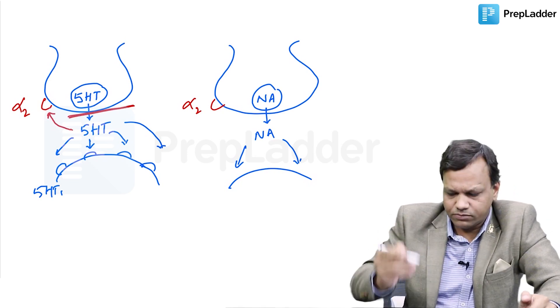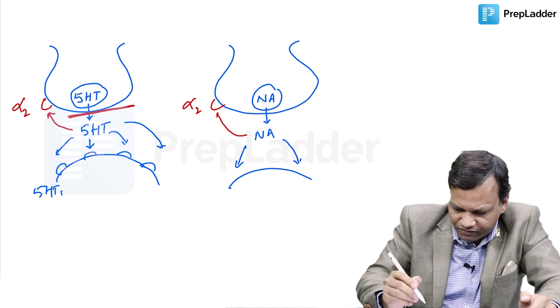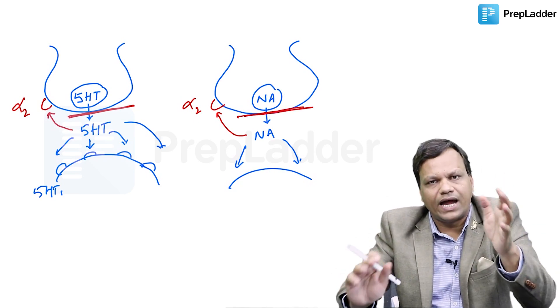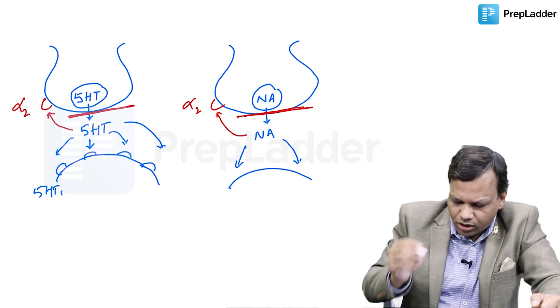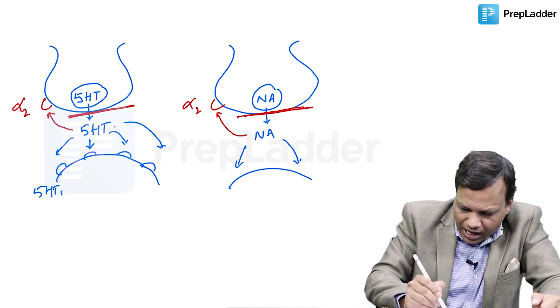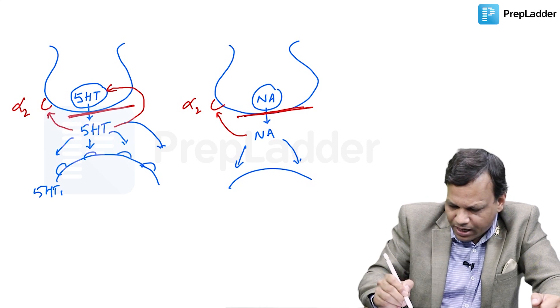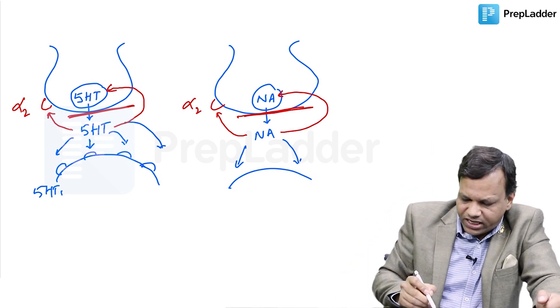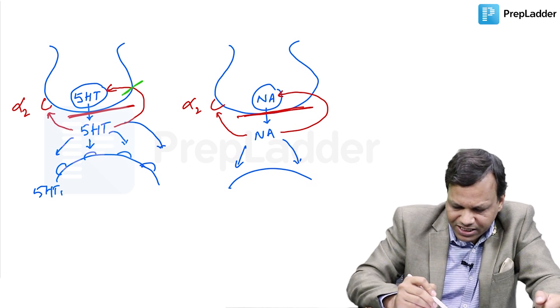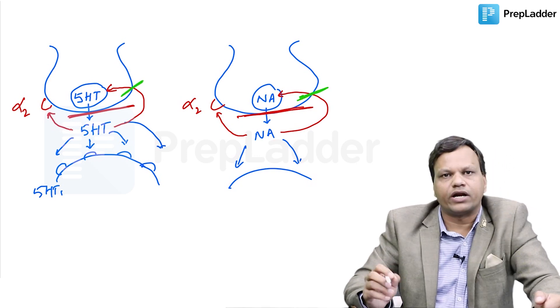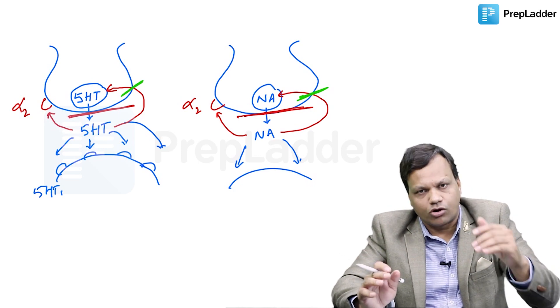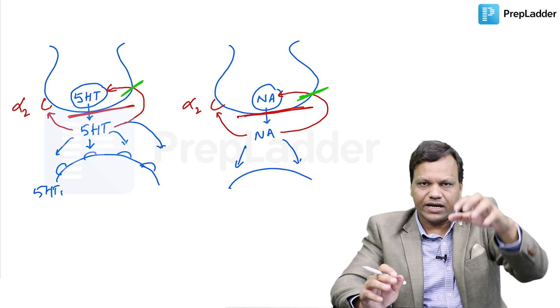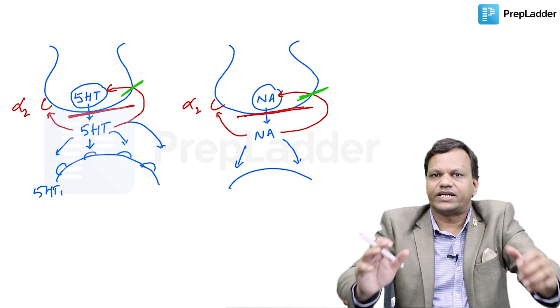More serotonin will not come. Similarly, when noradrenaline stimulates alpha-2, it will inhibit release of noradrenaline. Alpha-2 acts like a brake. After the serotonin or noradrenaline comes here, after producing the action, they will be reuptaken and the action stopped. Mostly the antidepressant drugs, they work by inhibiting the reuptake of serotonin or noradrenaline or both. When serotonin or noradrenaline do not go back, they will remain in the synapse and keep on stimulating the receptors that will treat the depression.